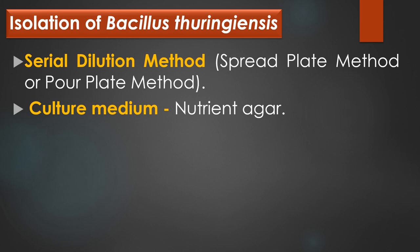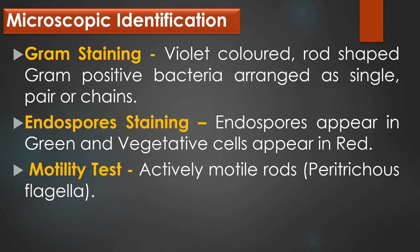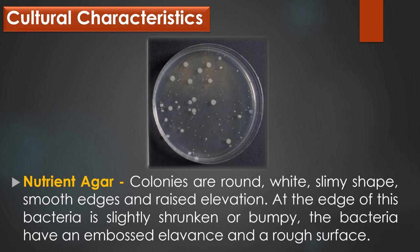Microscopic identification of Bacillus thuringiensis: under gram staining, Bacillus thuringiensis is observed as violet-colored, rod-shaped gram-positive bacteria arranged as single pairs or chains. Under endospore staining, endospores appear in green color and the vegetative cells appear in red color. In the motility test or hanging drop method, actively motile rods were observed due to the presence of peritrichous flagella. The colony morphology in nutrient agar shows colonies that are round, white, slimy shape, smooth edges and raised elevations. At the edge, the bacteria is slightly shrunken or bumpy, with embossed elements and a tough surface.